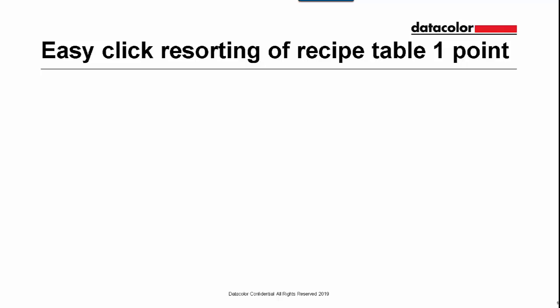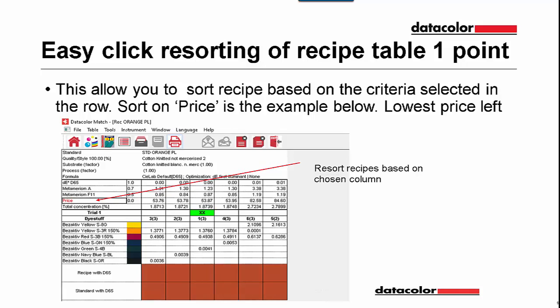The next option is Easy Click Resorting of the Recipe Table, and this option is worth one feature point. This allows you to sort recipes based on the criteria selected in the row. Sort on price is the example below — the lowest price recipe is on the left and gets increasingly higher as it moves to the right.